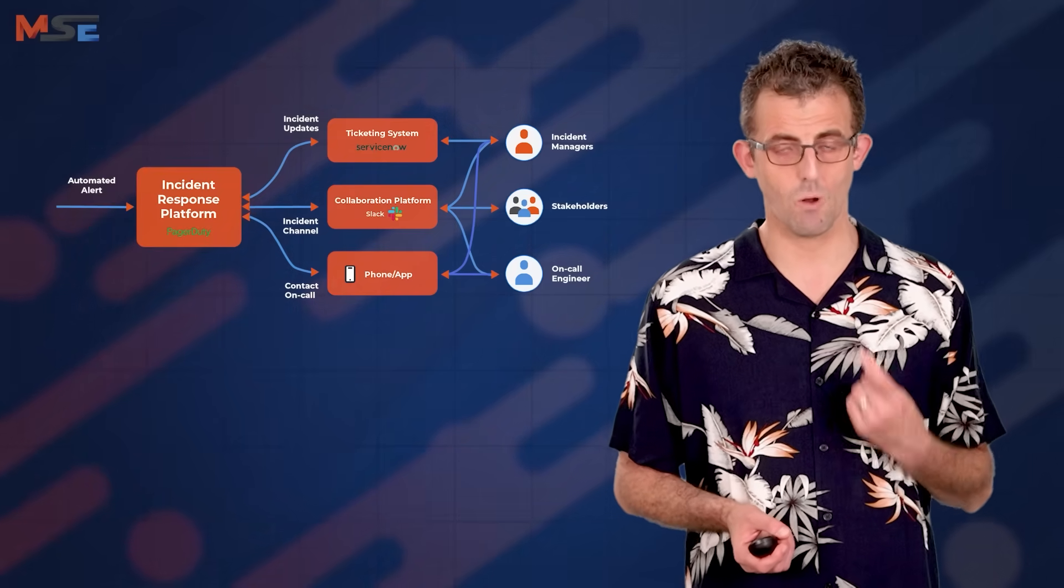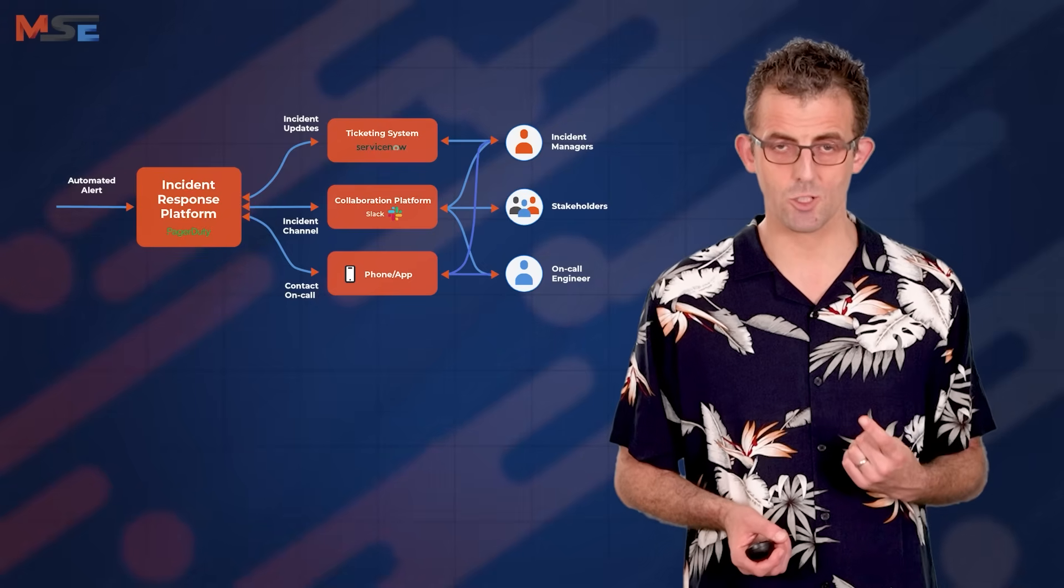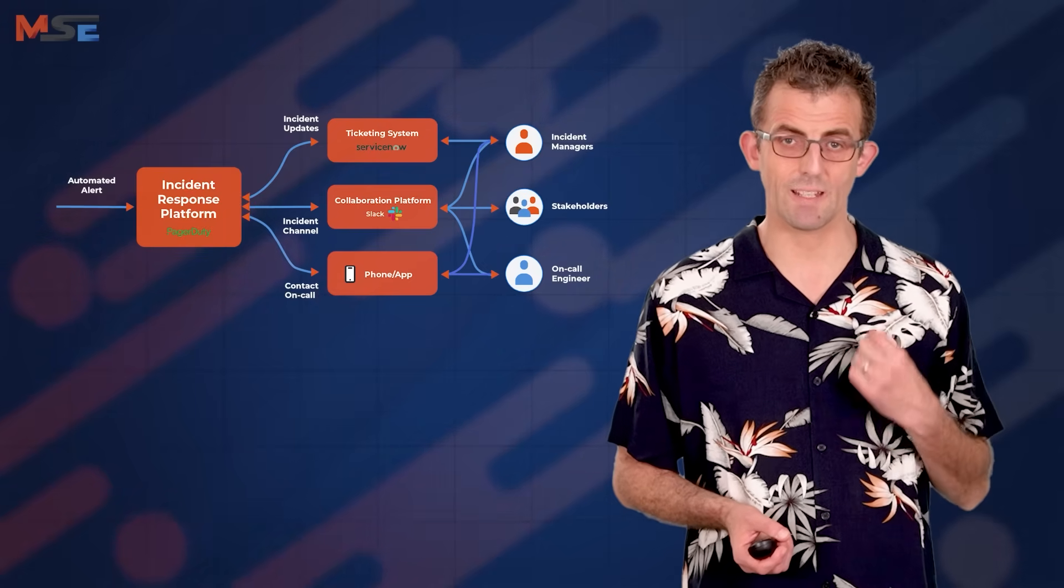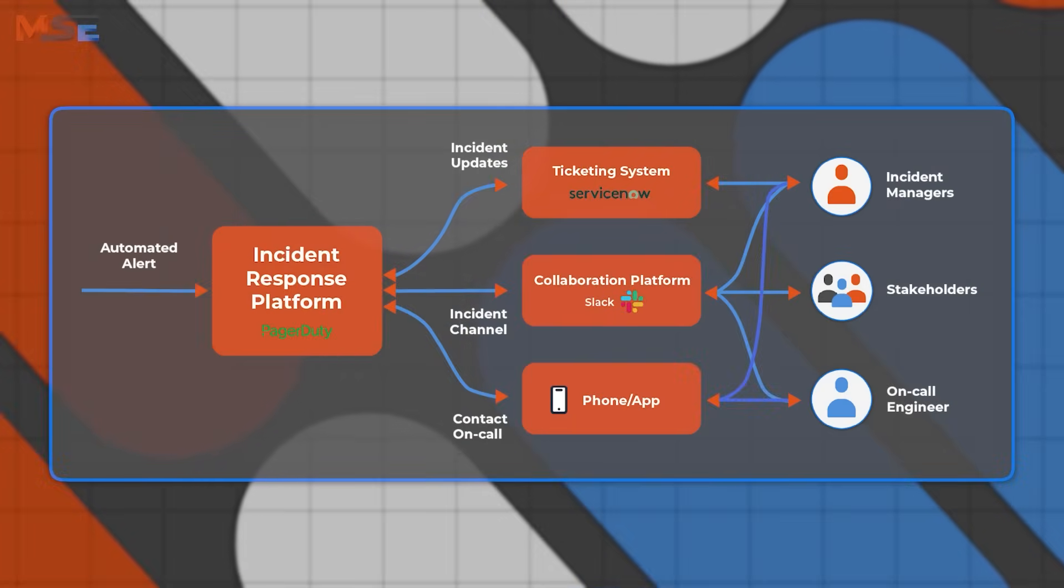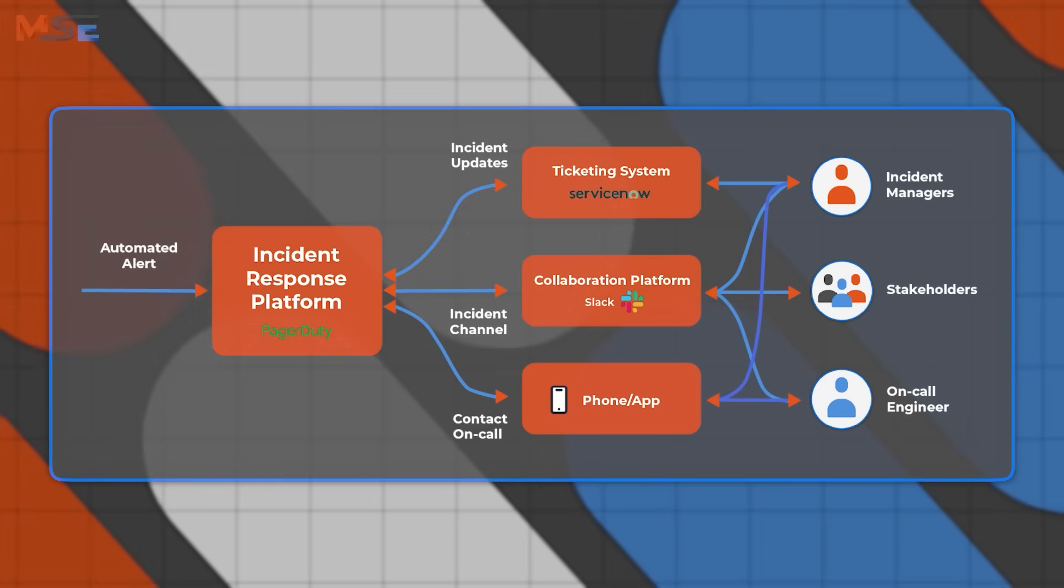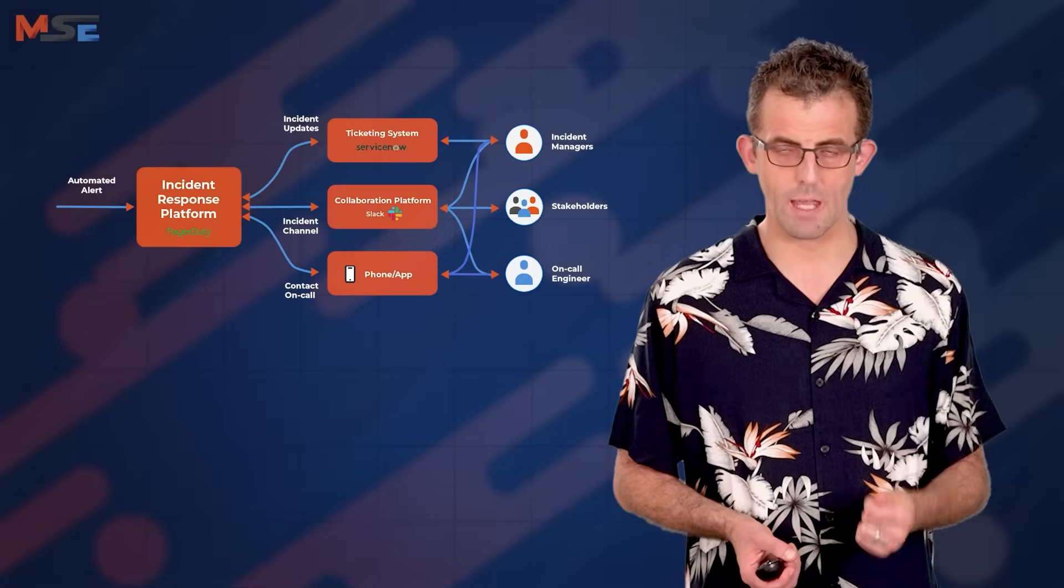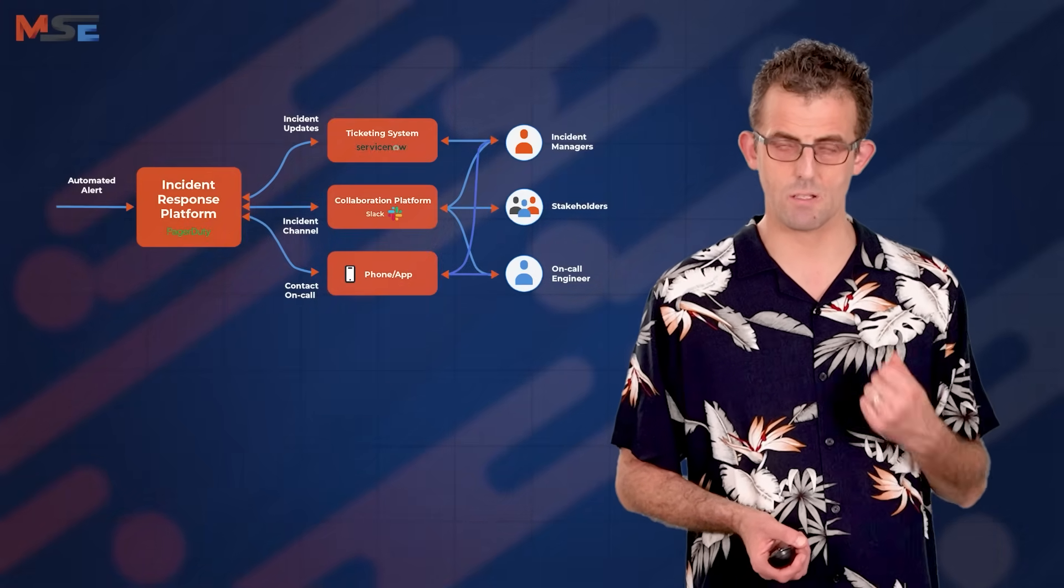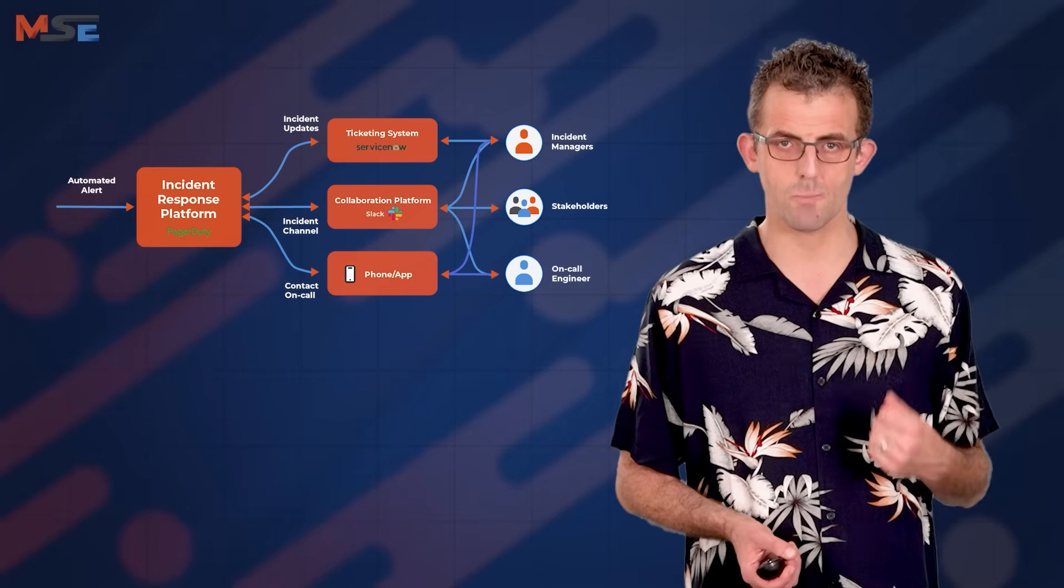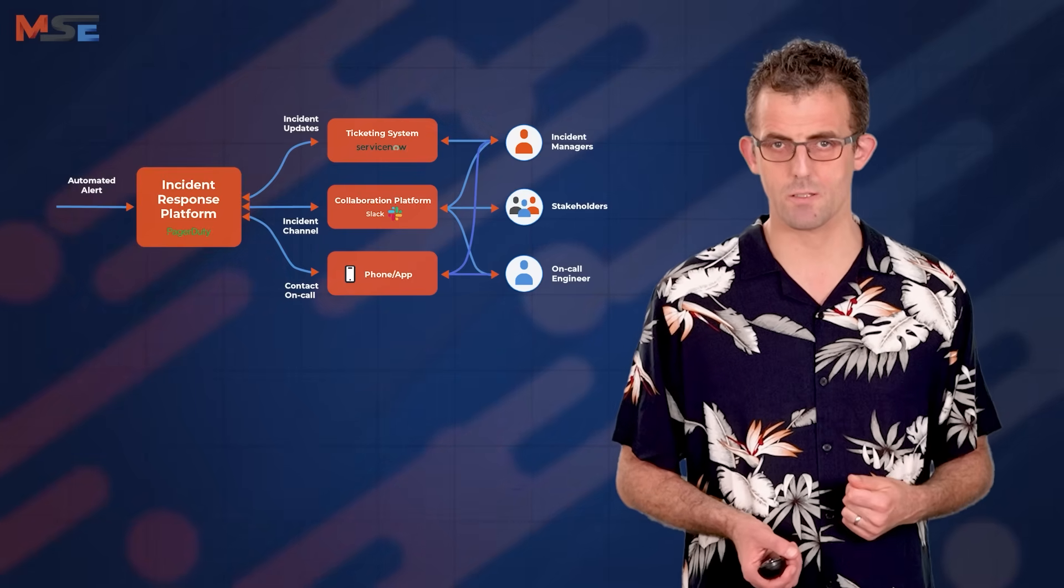First of all, obviously, it contacts the engineer on call. The engineer then acknowledges the incident on an app on their phone. The incident is raised in ServiceNow or your system of record. And it's also triggering the creation of a Slack channel that's public, discoverable. The name of the channel is the incident ID. And this allows stakeholders to follow along with incident response in real time without actually interrupting responders from their urgent tasks.